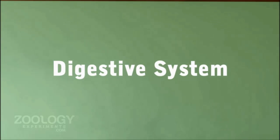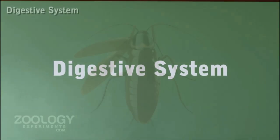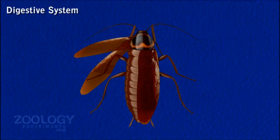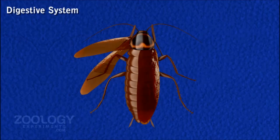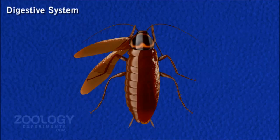Digestive System. This is the most prominent organ system in the body. It includes the mouth part, a long alimentary canal, and a pair of salivary glands.